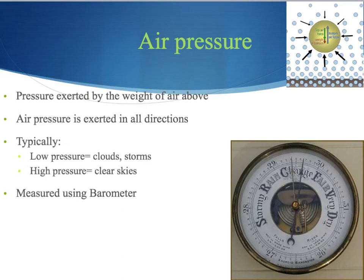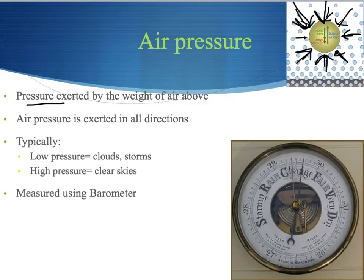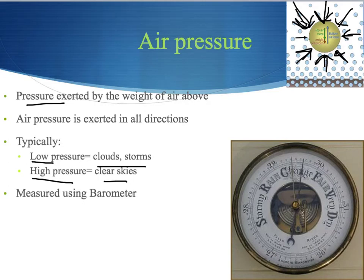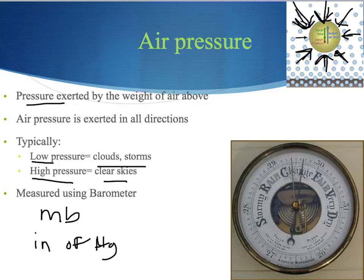Air pressure is defined as the pressure exerted by the weight of the air above us, pushing in all directions. Typically, low pressure brings clouds, storms, and rain, while high pressure systems bring clear skies. Air pressure is measured using a barometer. On a weather map it can appear in millibars, inches of mercury (Hg), or ATM (atmospheres).